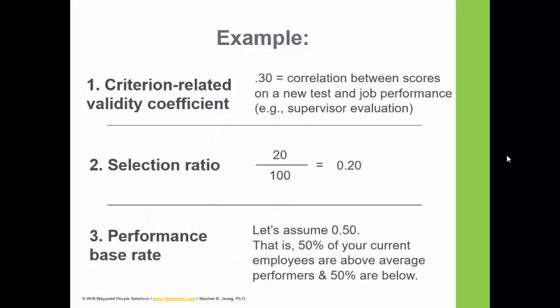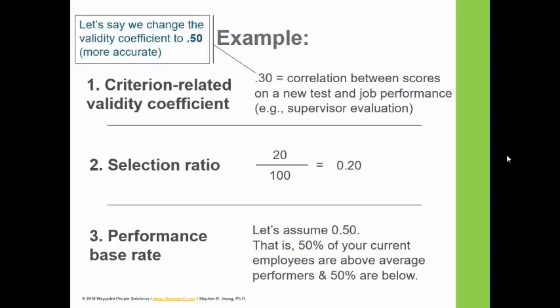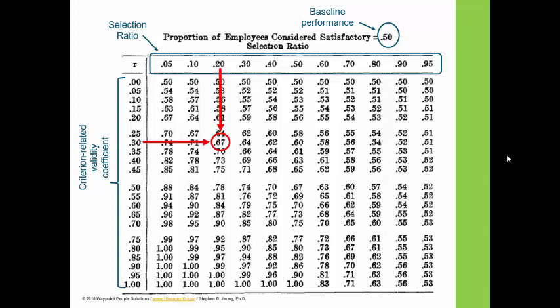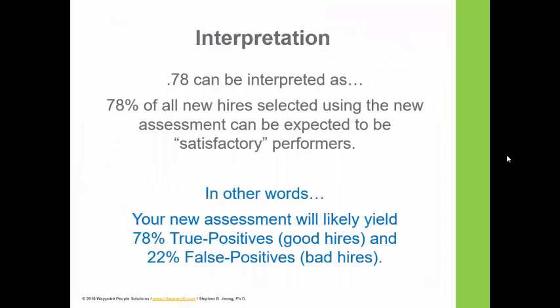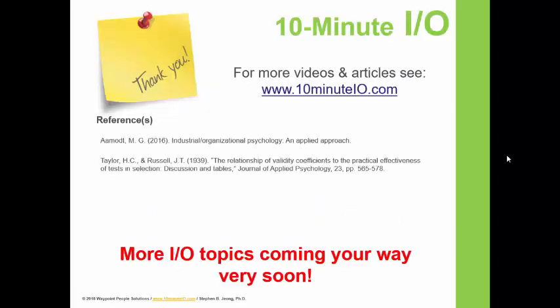Let's run another example using the same numbers but changing the validity coefficient from 0.30 to 0.50. Going from 0.30 to 0.50 means there's a stronger relationship between test scores and job performance — essentially a better assessment. Keeping all other numbers the same and looking at the table, we move from 0.3 to 0.5 and now see the value 0.78. This means 78% — rather than 67% — of all new hires selected using this assessment can be expected to be above-average performers: 78% true positives and 22% false positives. I hope that was helpful; look for more videos soon. Thank you so much for watching.